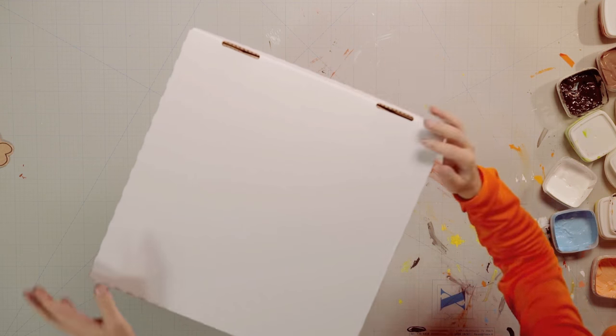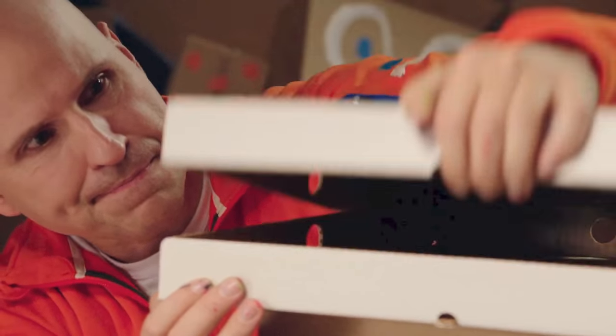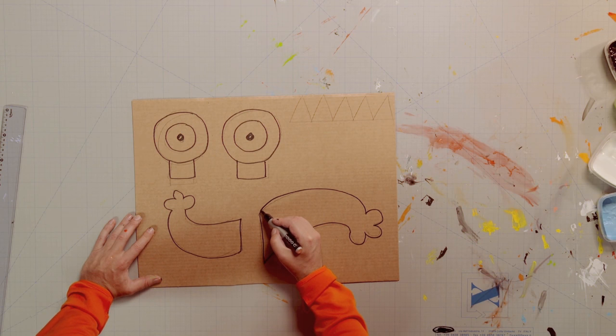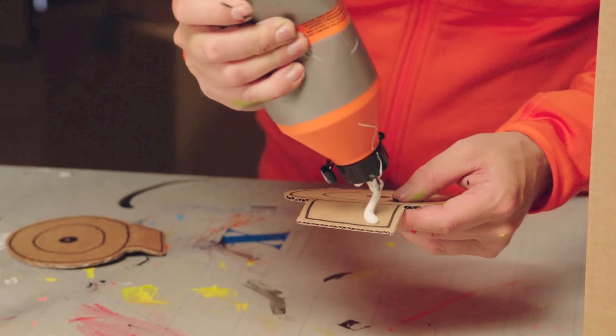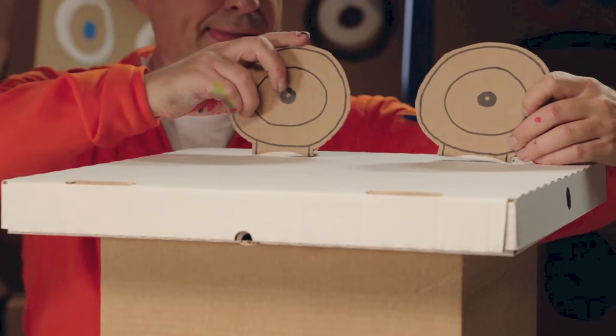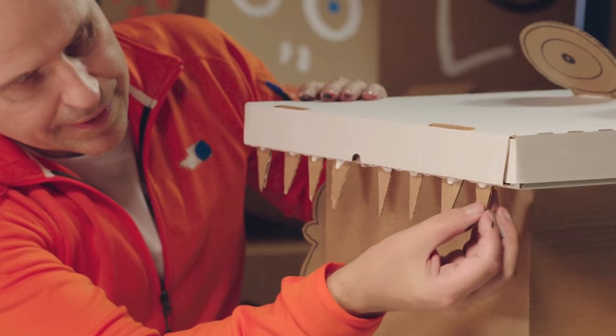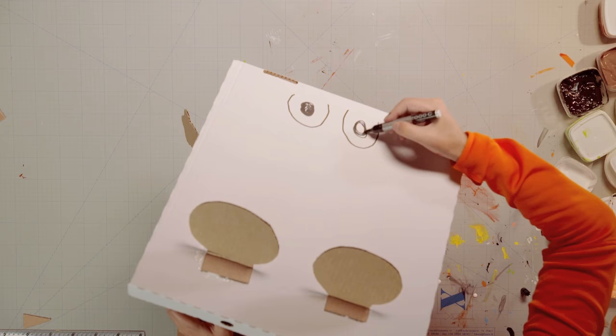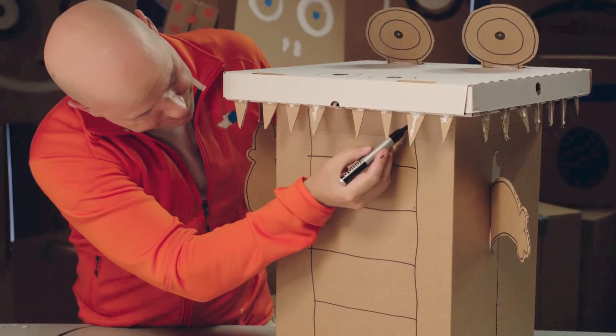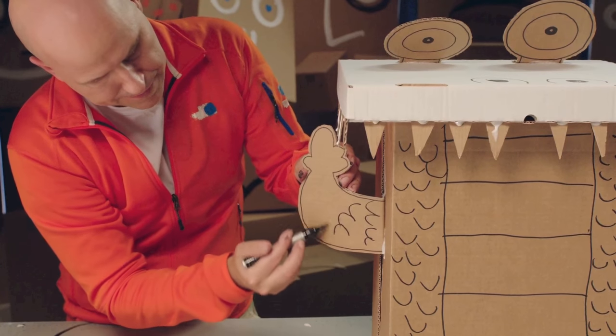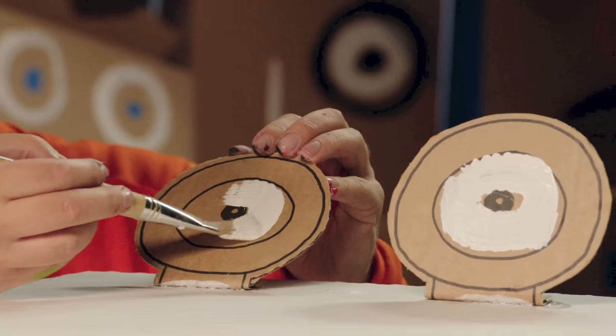First, glue together the boxes and check that the mouth opens. Next, make all the parts and glue them all on. Then draw on the details and paint the colors and stripes.